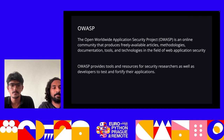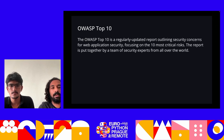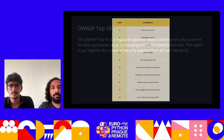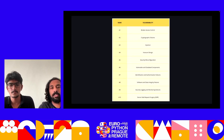OWASP stands for Open Worldwide Application Security Project. It's an online community that produces free tools and resources in the field of web app security to test and secure our applications. The OWASP Top 10 is a list of the top 10 most frequent and critical security vulnerabilities in web applications, published in 2021. In the coming slides, we'll be going over each of these.